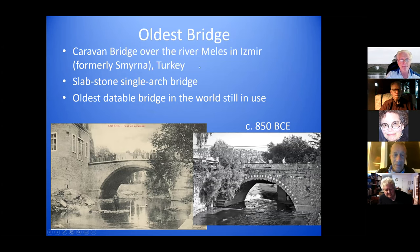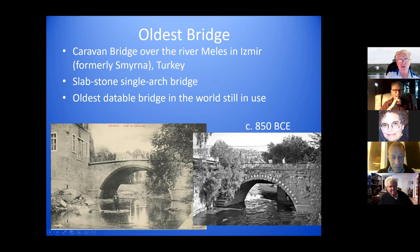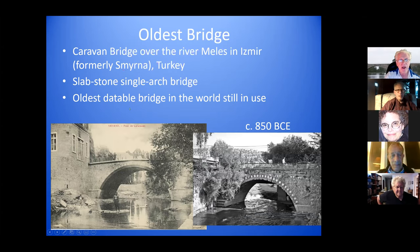This bridge interested me because I found dozens of pictures of it and two pictures don't appear to be the same bridge. It was built around 850 BCE — the caravan bridge over the river near what was formerly called Smyrna in Turkey. It's a slab stone single-arch bridge and it's the oldest dateable bridge still in use in the whole world.